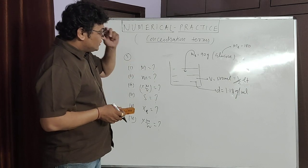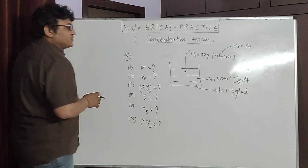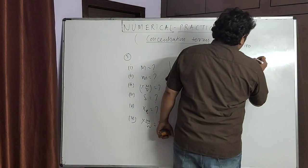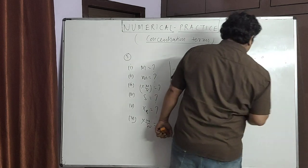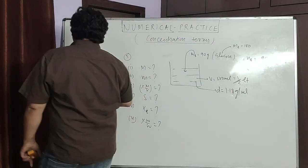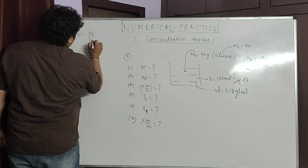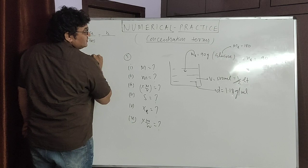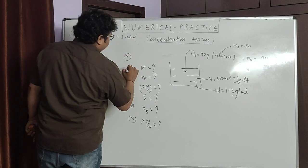Let us do these questions one by one. First, molarity of solution. Moles of solute = weight/molar mass = 90/180 = 0.5 mol. Molarity = moles of solute per liter of solution = 0.5/0.5 = 1 molar. First part is done.